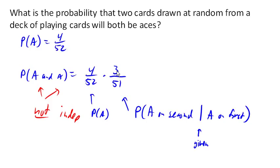And so our probability ends up being 12 out of 2652, or in other words, 1 out of 221, rather than the 4 out of 52 times 4 out of 52, okay? So again, this is called a conditional probability.